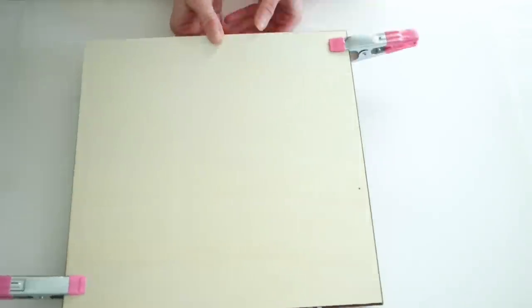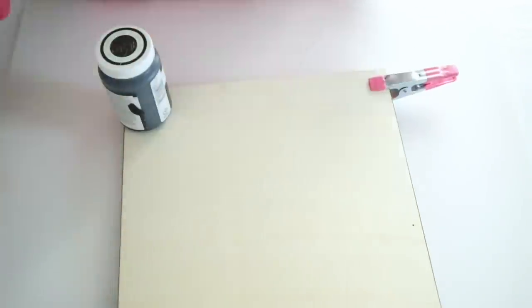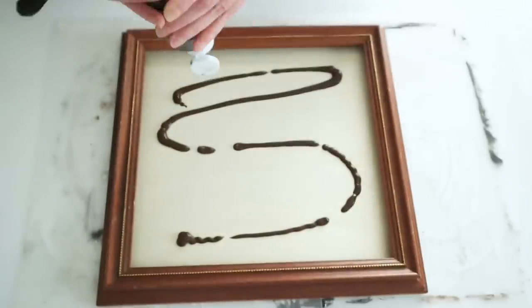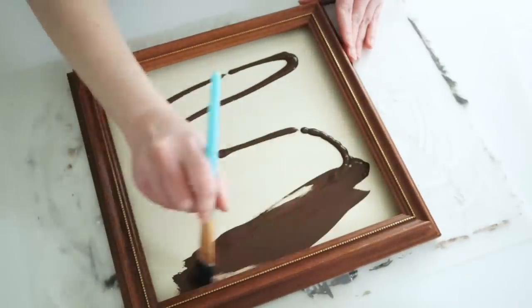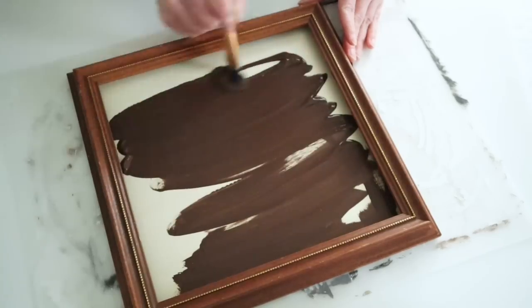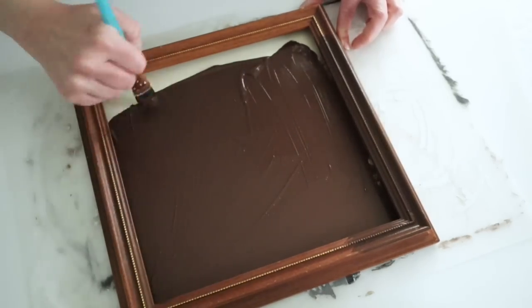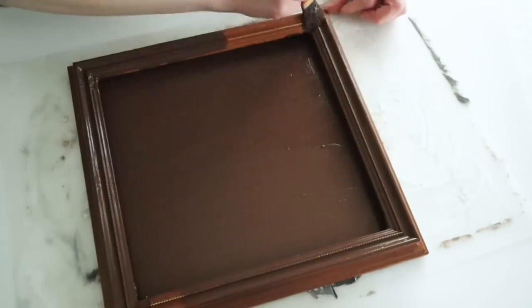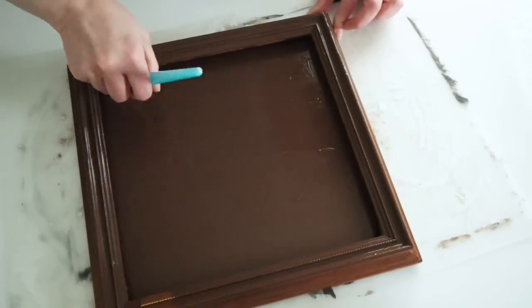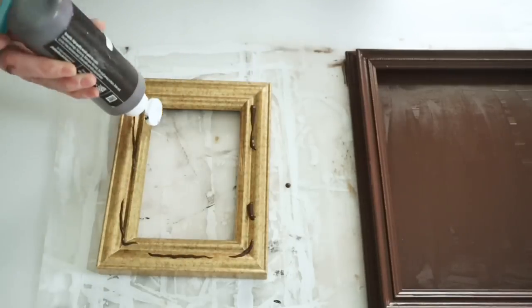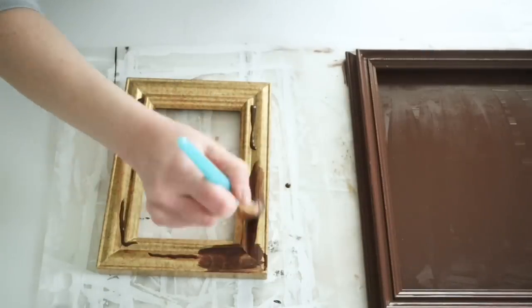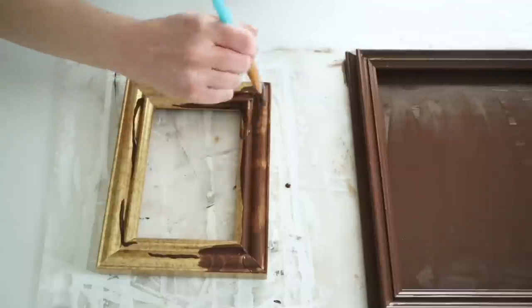I only had two clamps, so I ended up just putting some paint on the other corners. Once it was dry, I'm flipping this over and using the color Burnt Umber from Apple Barrel to paint this entire thing. This is going to be the undercolor for the crackle method. I also painted that smaller frame the same color.